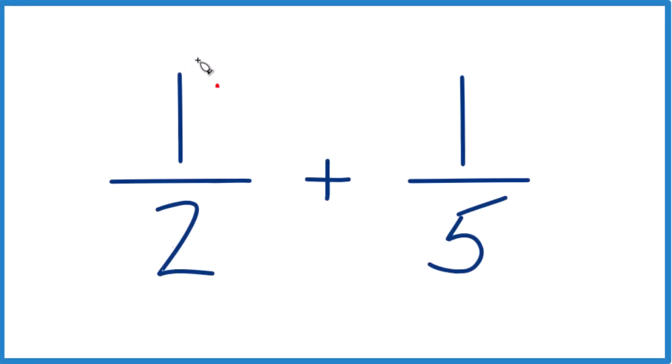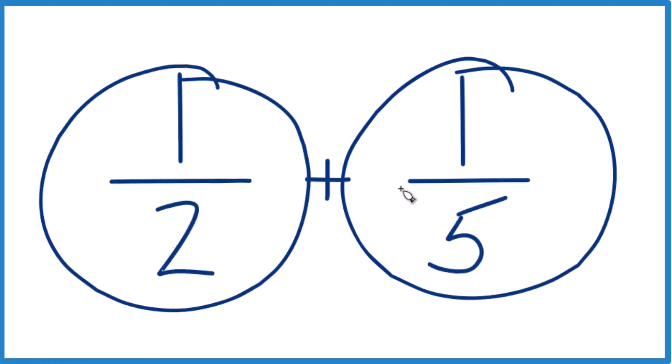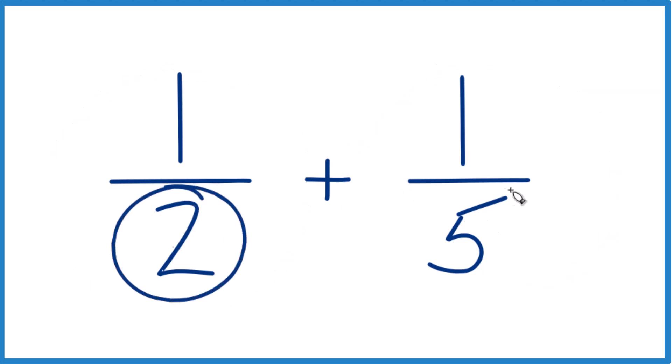In this video we're going to add 1 half plus 1 fifth and here's how you do it. We need to get the denominator here to be the same because if we have the same denominators we'll just add the numerators and we'll be done.